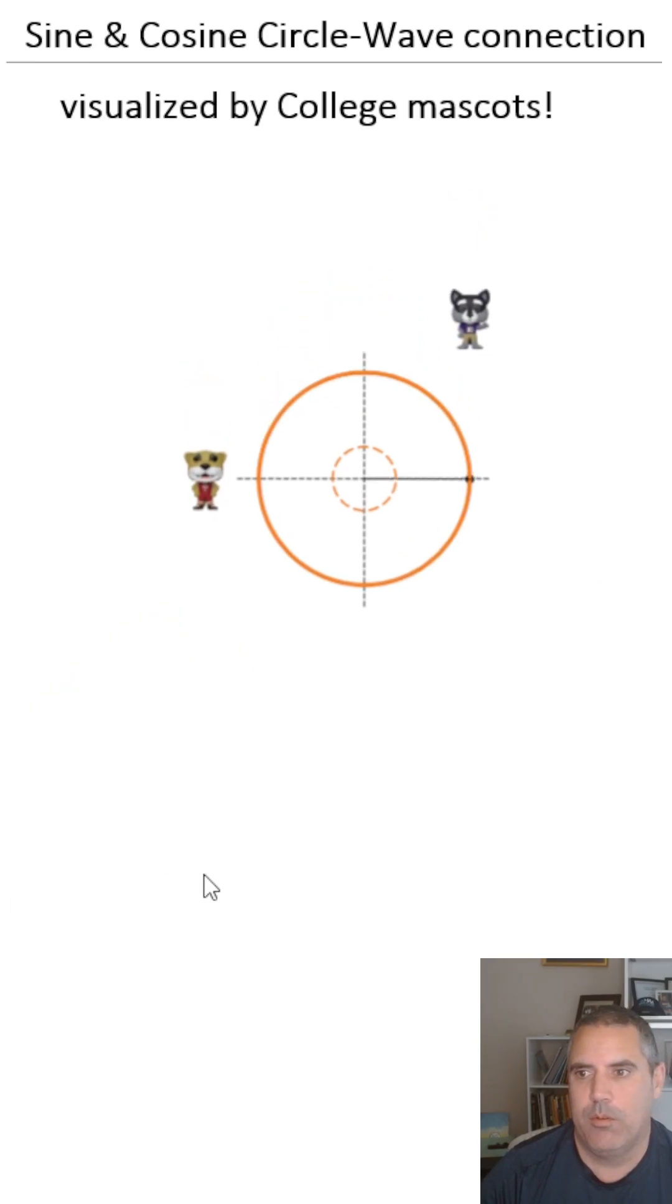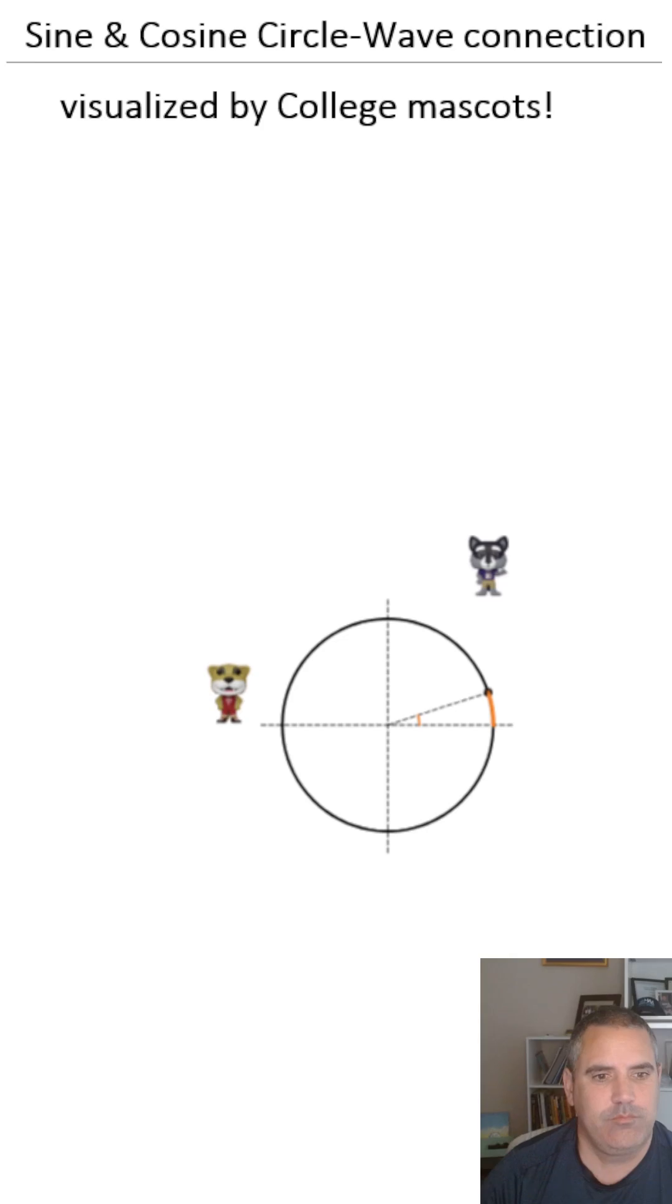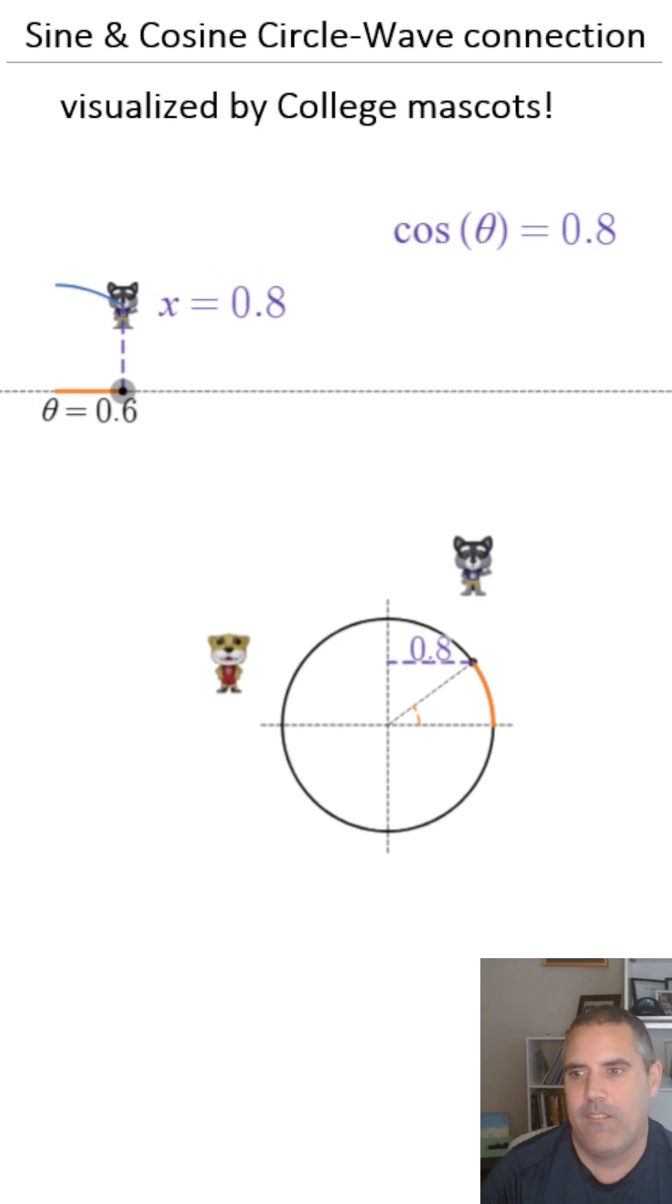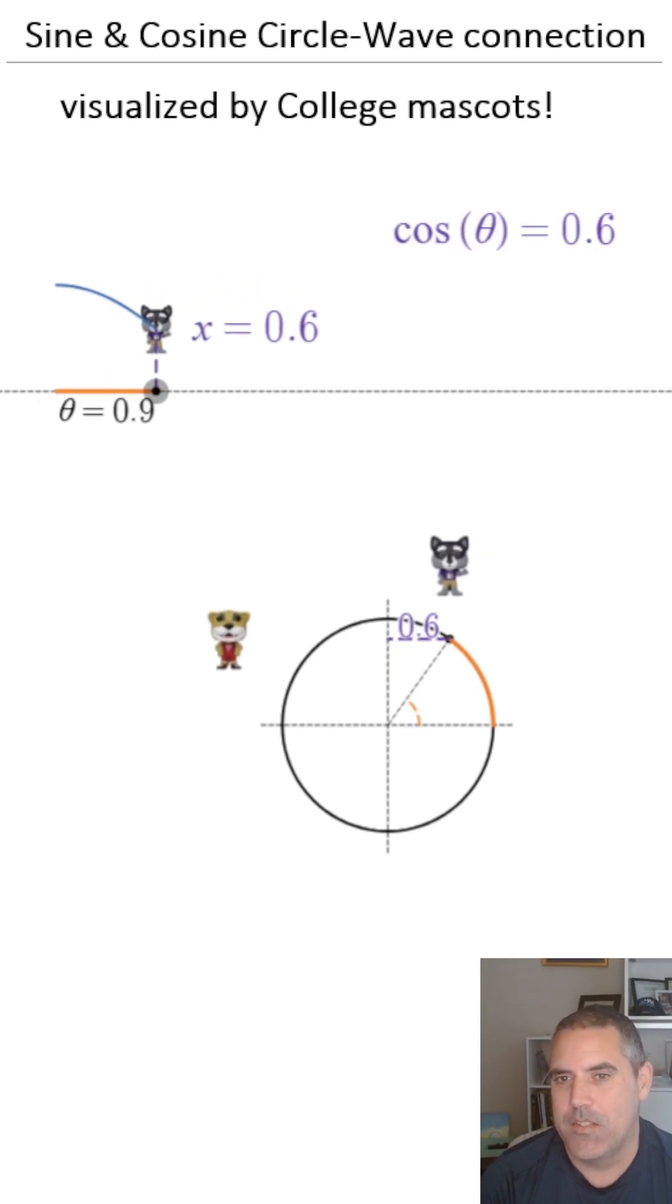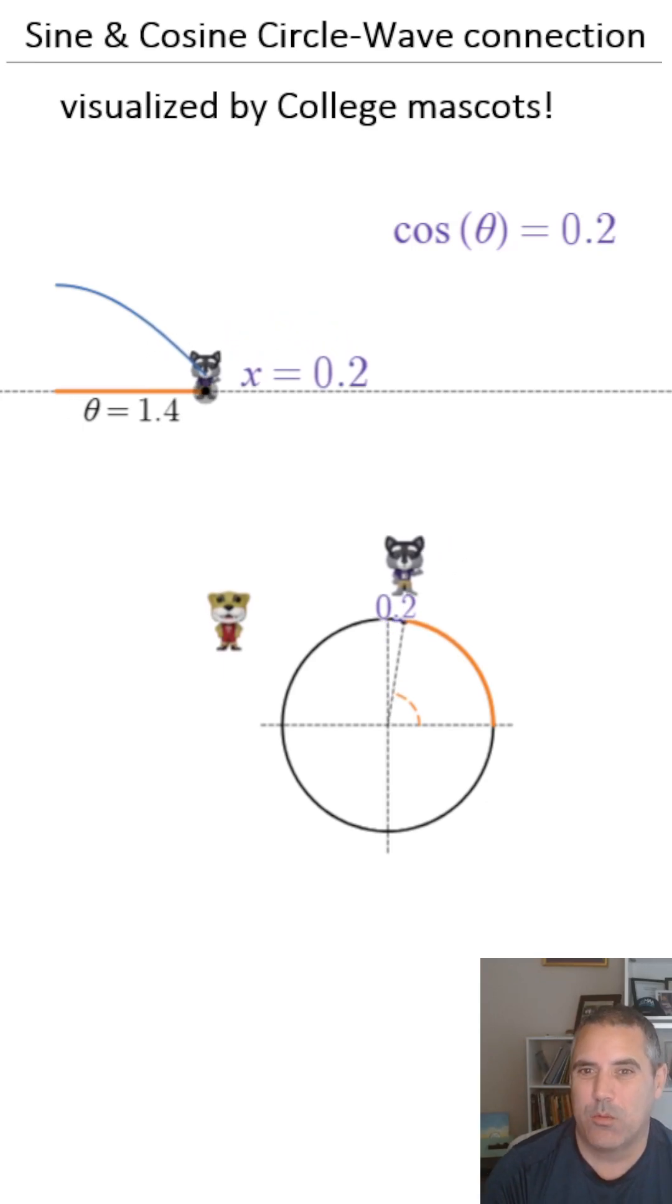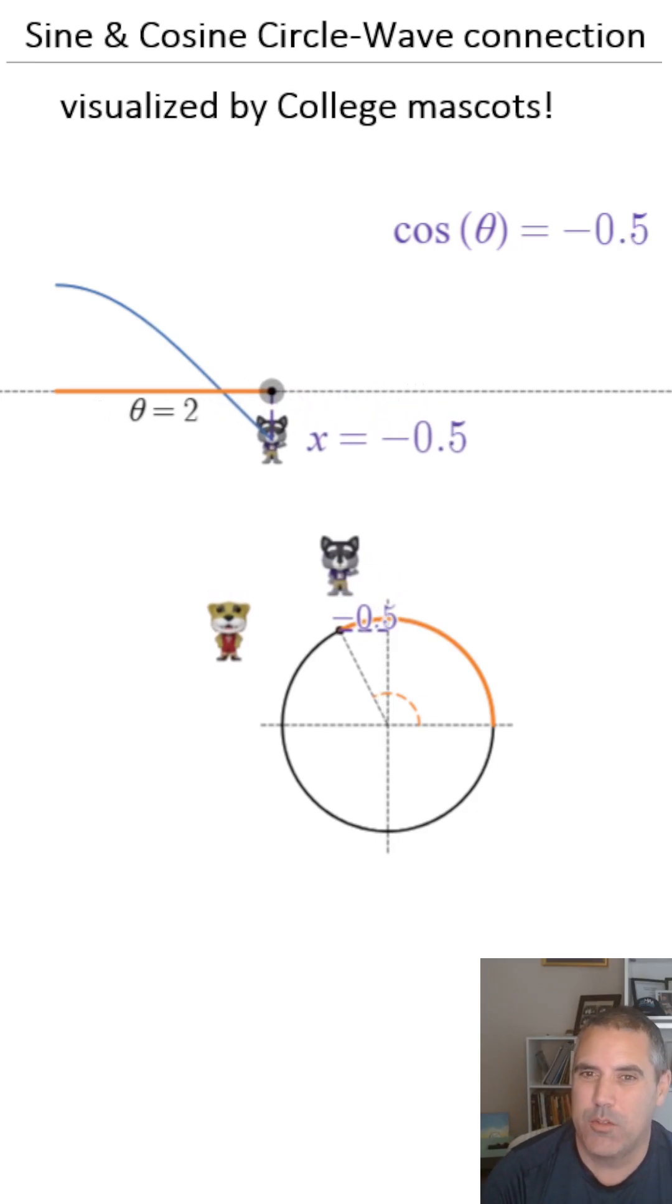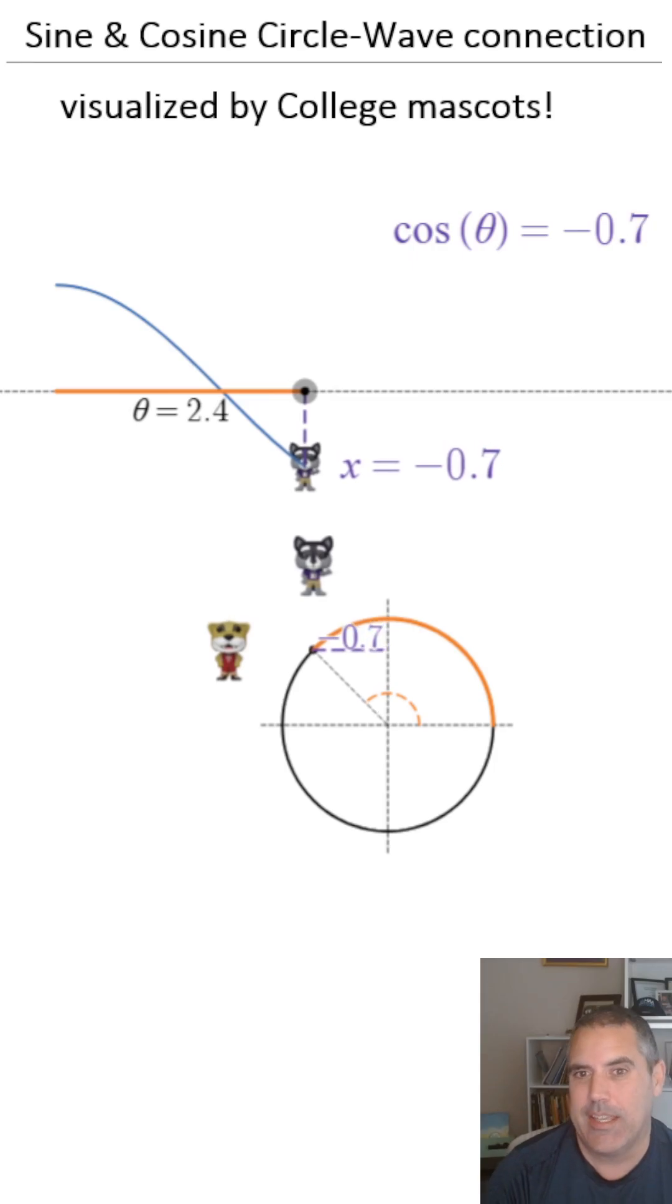All right, Harry, you're up. So I'm going to move this down. And here comes Harry. This is the cosine graph. It starts at 1 because the X coordinate starts at 1. Harry's keeping track of the X coordinate. It confuses people a little bit that the output is X here.